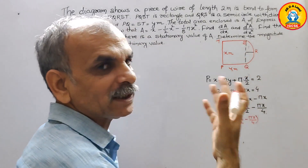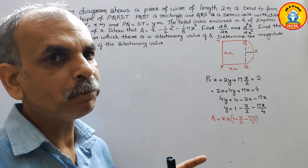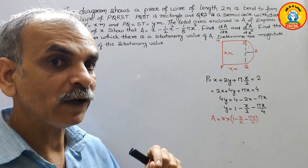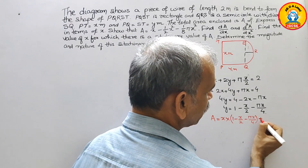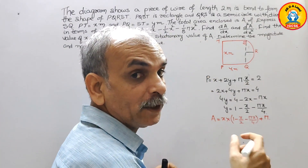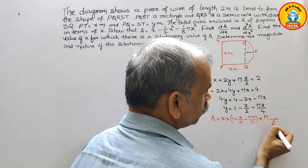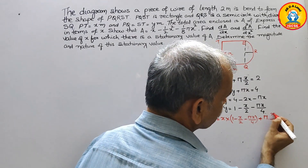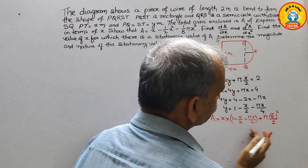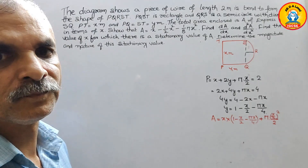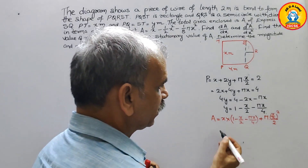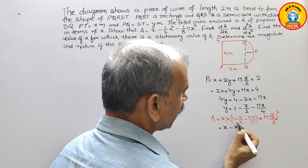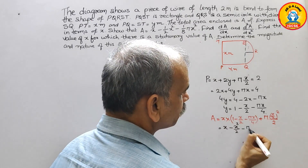Now we find the area of the semicircle, which is pi·R² divided by 2. So we add plus pi·R²/2 to the rectangle area. Since R equals X/2, we substitute X/2 whole squared into the semicircle area formula.